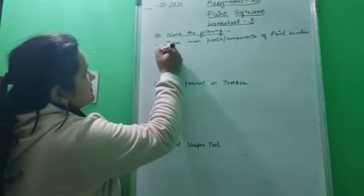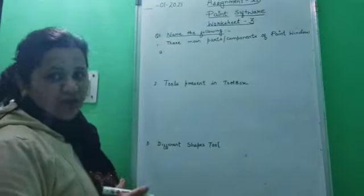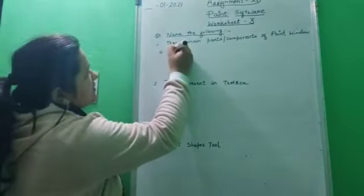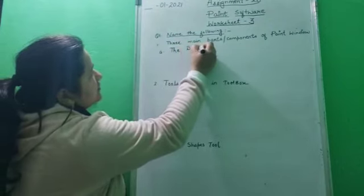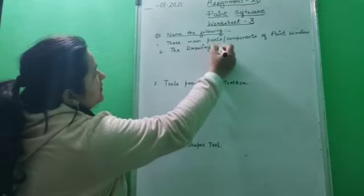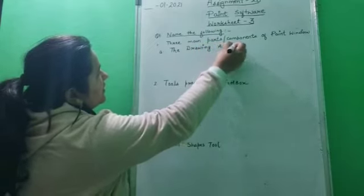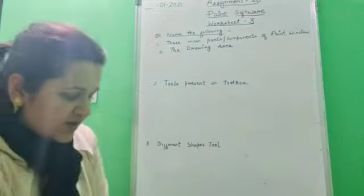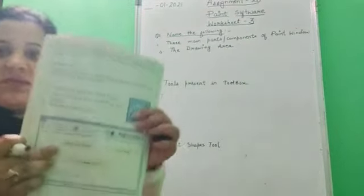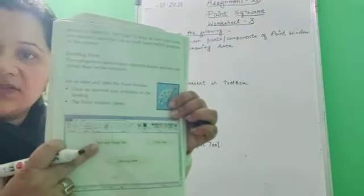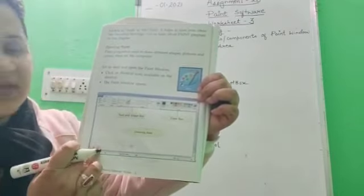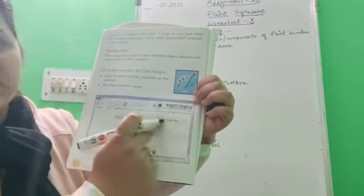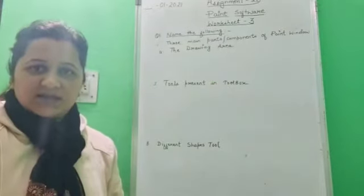The first part is the drawing area. When you open the paint software on your computer screen, this kind of window opens. This is the white area on which we draw something, and it is known as the drawing area.